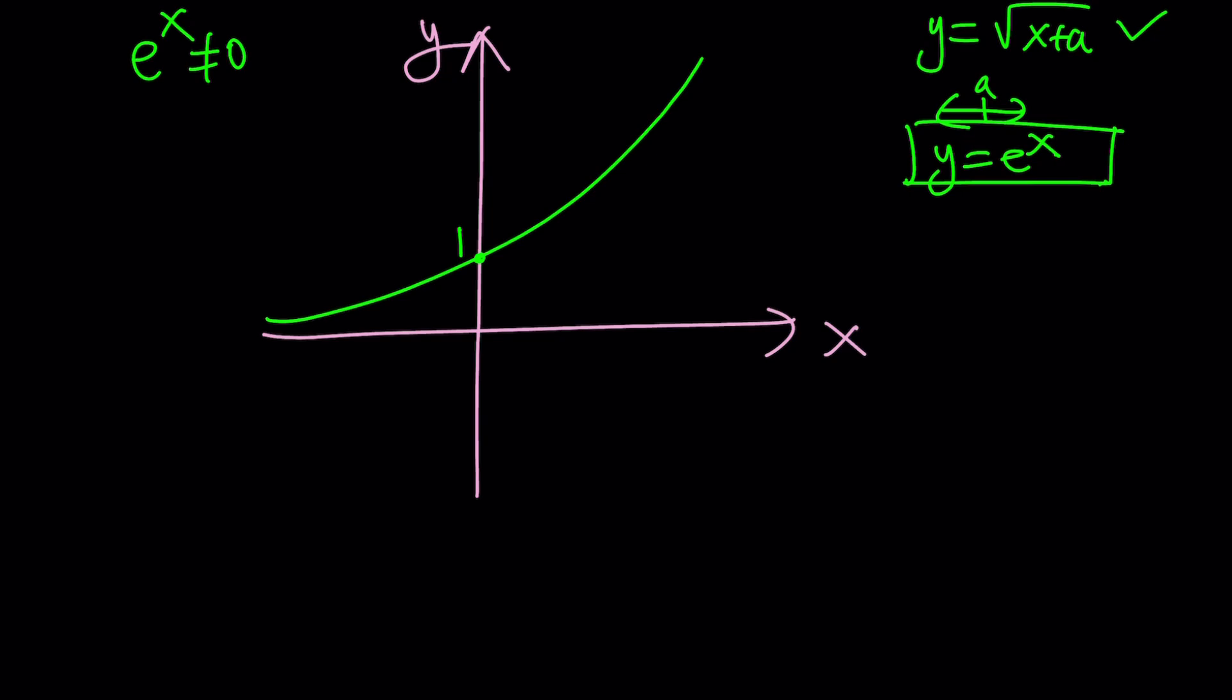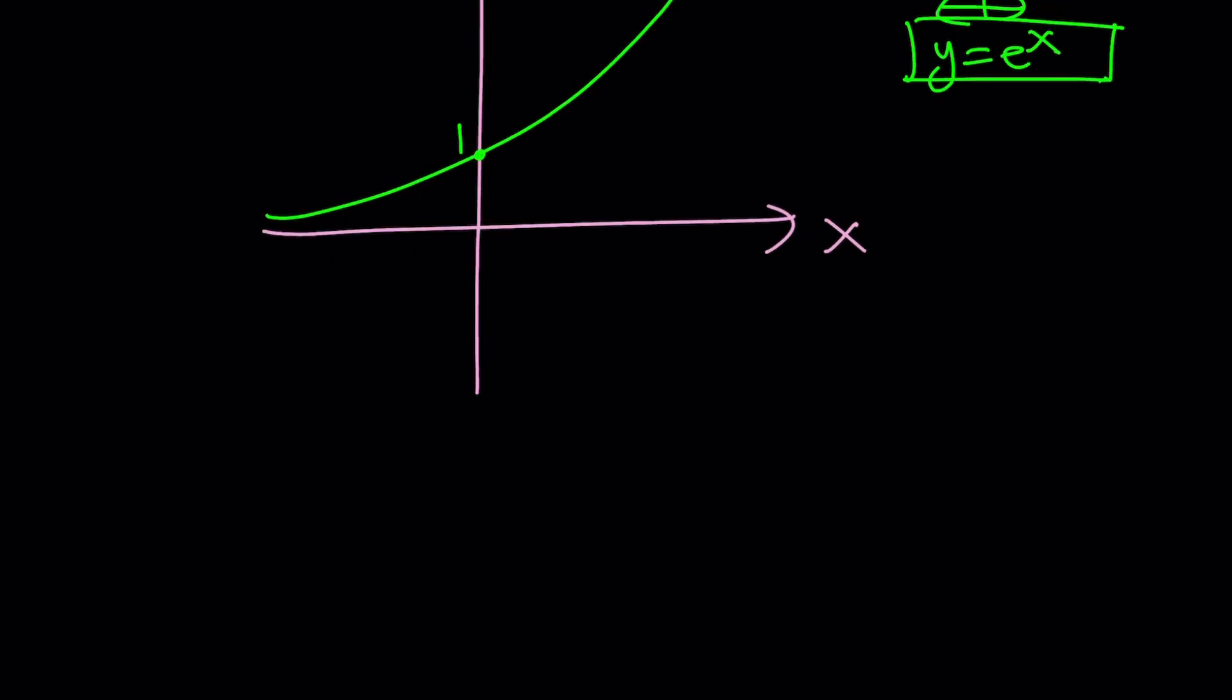One thing that is constant that's not going to change is y equals e to the x because that's fixed. But this one is kind of like a function, a graph that moves with different values of a. That's what I mean by a parameter. It's actually a family of functions. For each value of a, you get a different function, right? So all in one.